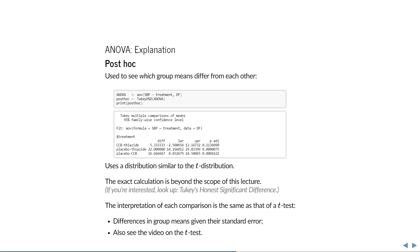Of course, it isn't exactly the same, or it would just have been called Tukey's bunch of t-tests. So if you're interested, look up Tukey's honest significant difference or the studentized range distribution. The interpretation of each comparison is the same as that of the t-test. Namely, just the differences in group means given their standard error.